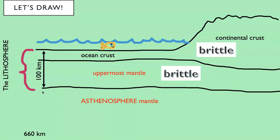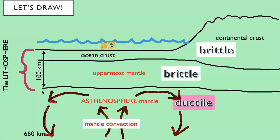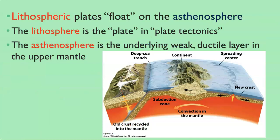The asthenosphere extends down to about 660 kilometers from the surface and is the next part of the mantle beneath the uppermost mantle. It is not brittle — it's ductile. It's still a solid, but it's capable of flow. We have mantle convection in this area, and it's believed that this mantle convection actually pushes the overlying lithospheric plates around. This is something Wegener didn't understand — he didn't realize that ocean crust and continental crust could merge and move together as one giant plate.